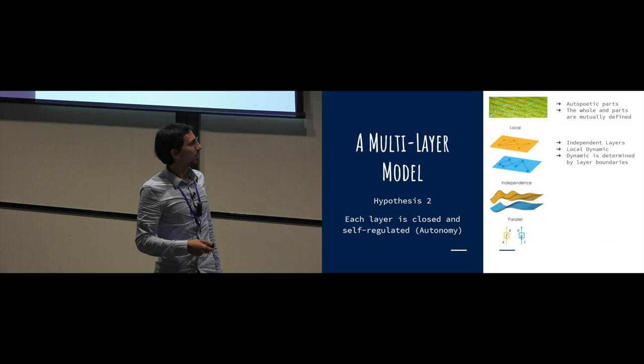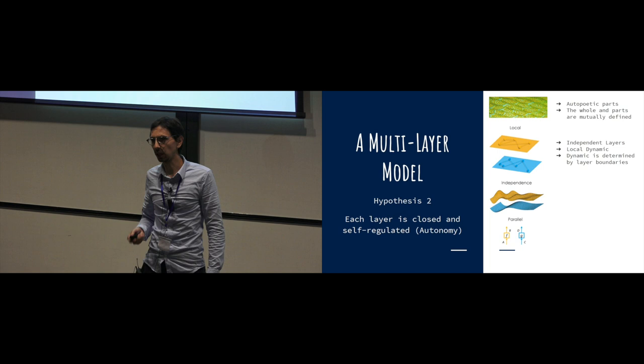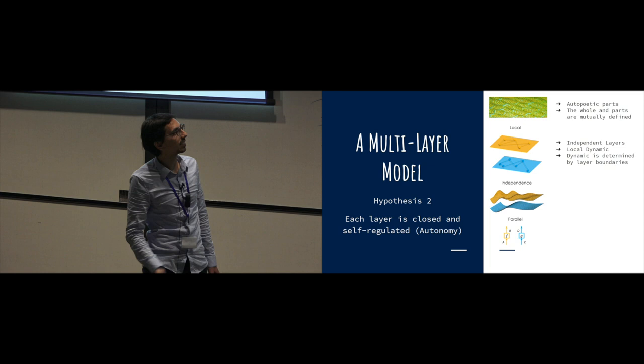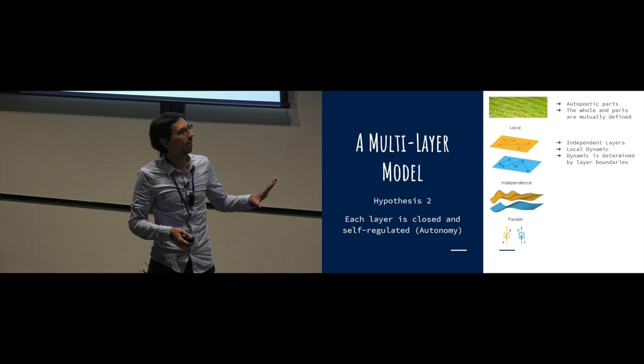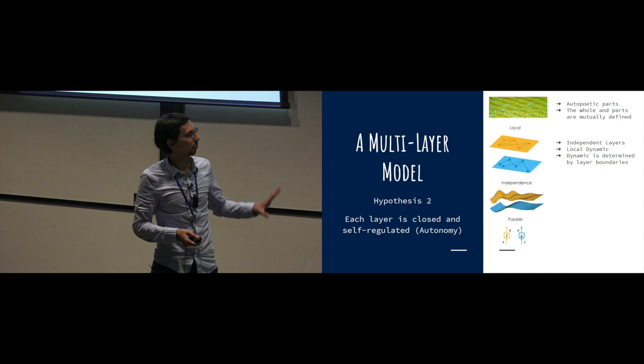The important thing is that to define them, you need the second hypothesis. The second hypothesis is that these layers should be closed and self-regulated. It means that you need autopoietic parts here, and autopoietics will mean that the whole and the parts are mutually defined. These layers are independent, they have local dynamics, and the dynamics is determined by the layer boundaries.